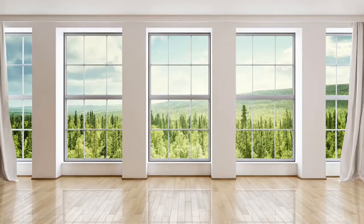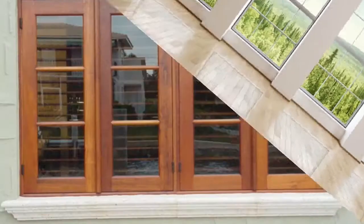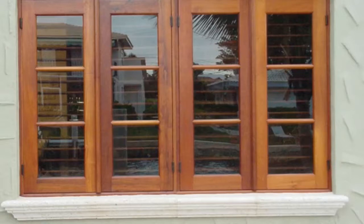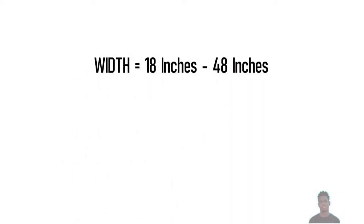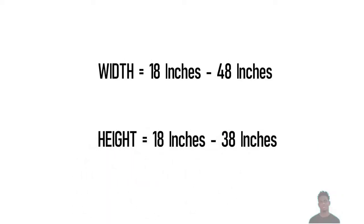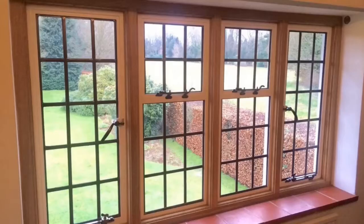Depending on when your home was built, it will either have a vinyl or wood window. These are the largest and most common in standard window sizes and are prefabricated, coming in different sizes. The standard sizes come with a width from 18 inches to 48 inches and a height from 18 inches to 38 inches. Wood windows are not that popular today because of the rot that can occur around the frame after some years.